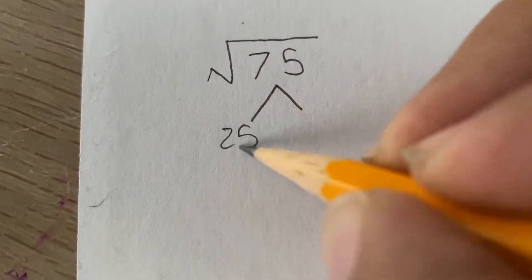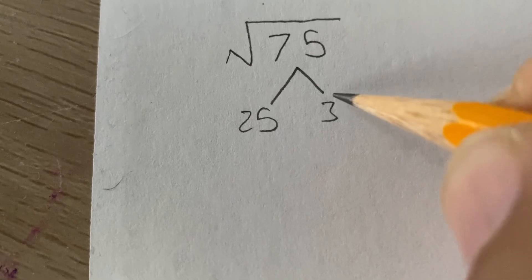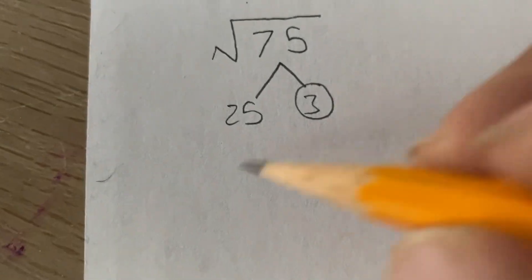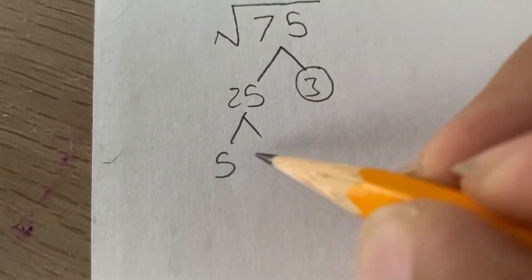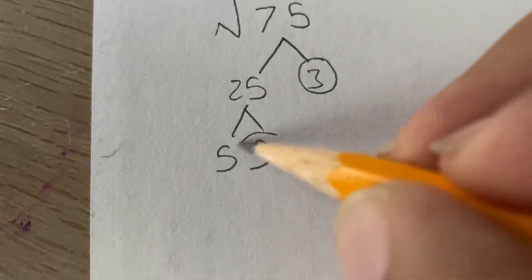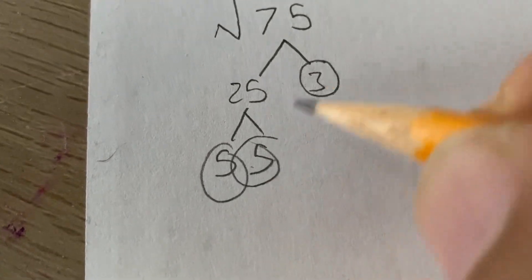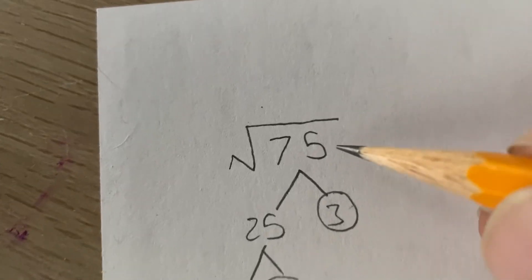Alright, so here we go. So let's say it's 25 times 3. 3 is a prime number, then 5, 5, and we are done. These three prime numbers, when multiplied, make 75.